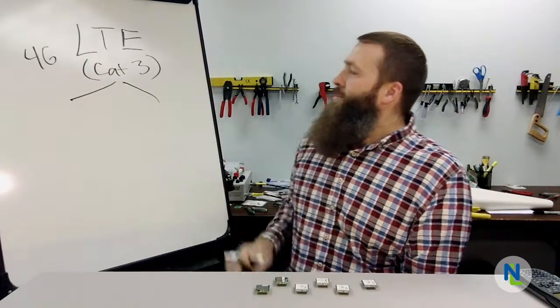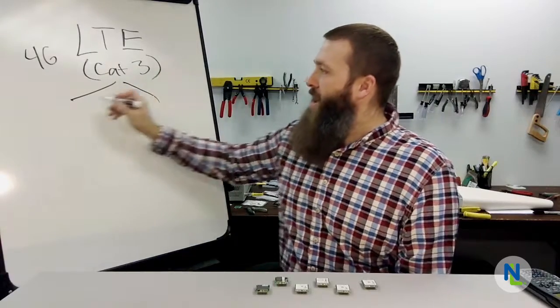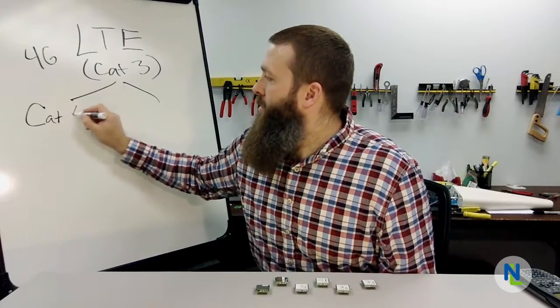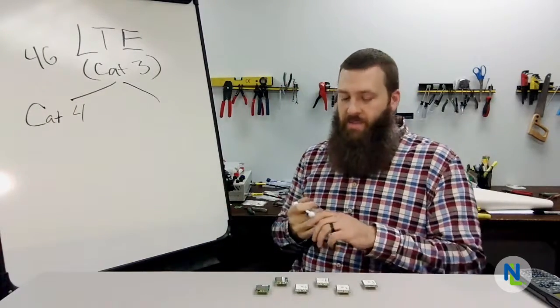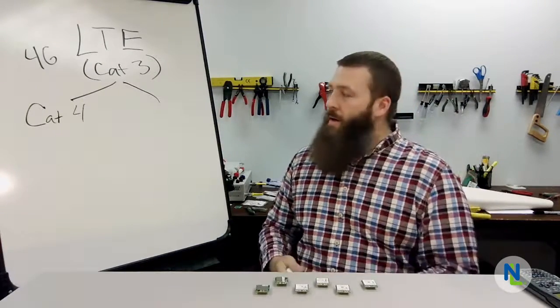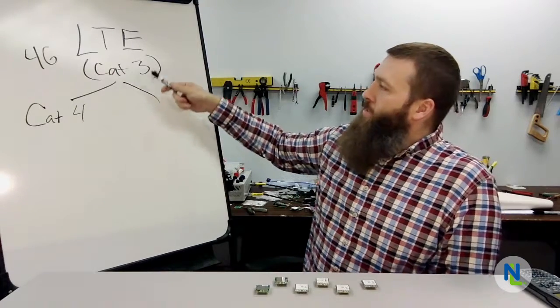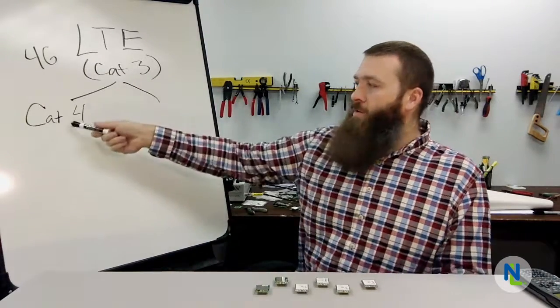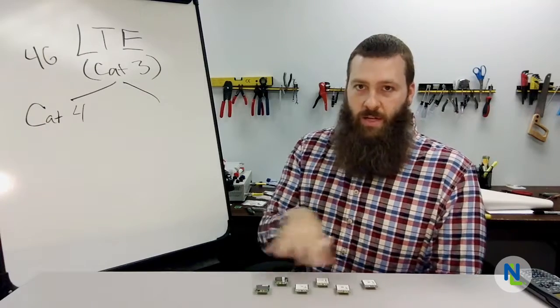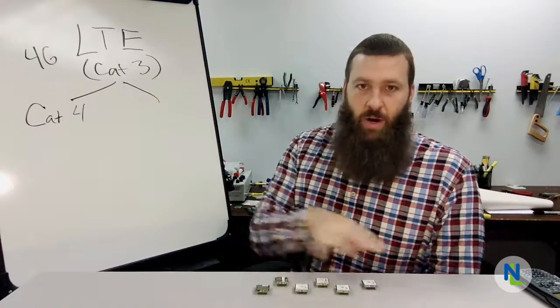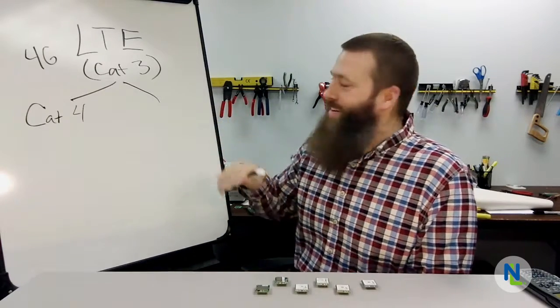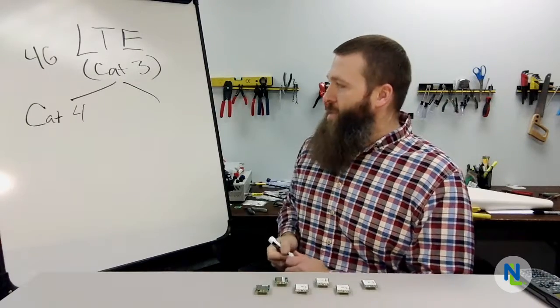This is not a number of felines which have been lined up in a row. This is the category, the third category of LTE. From here, guess what happens? Things start to divide again. From Cat 3, we then have Cat 4. Cat 4 makes sense, right? It's higher number, must be faster. Good news, it is. The theoretical download speed for Cat 3 is 100 megabits per second. Theoretical for Cat 4 is 150 megabits per second. In case you're wondering, we have all of the technologies that we've talked about, minus analog, sitting right here in front of us, all in the Skywire modems.